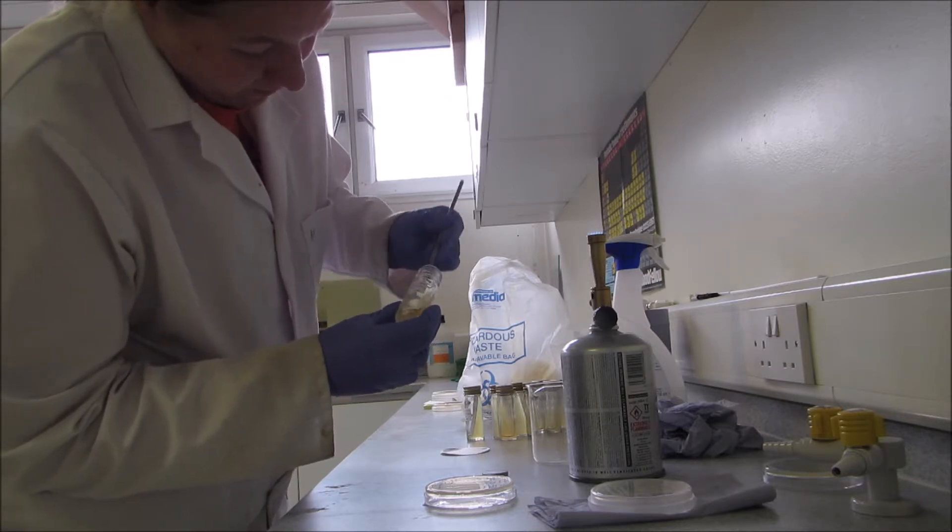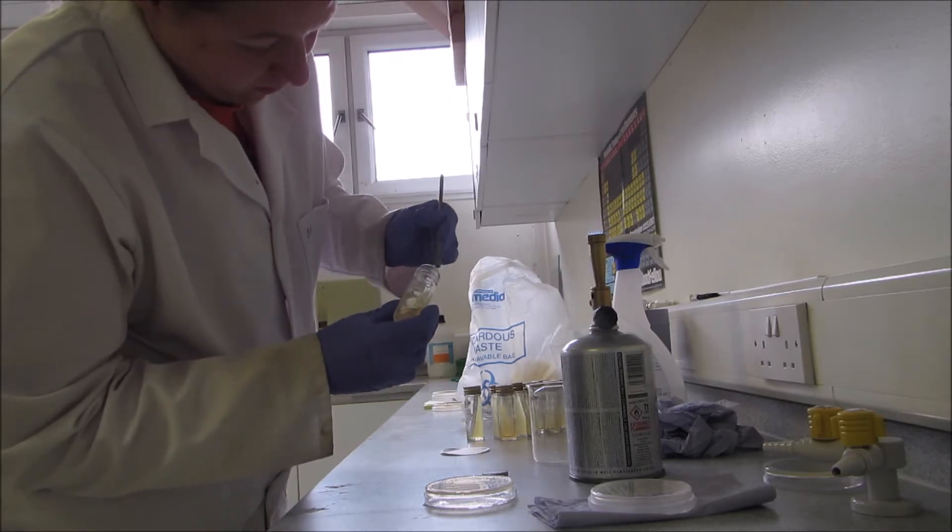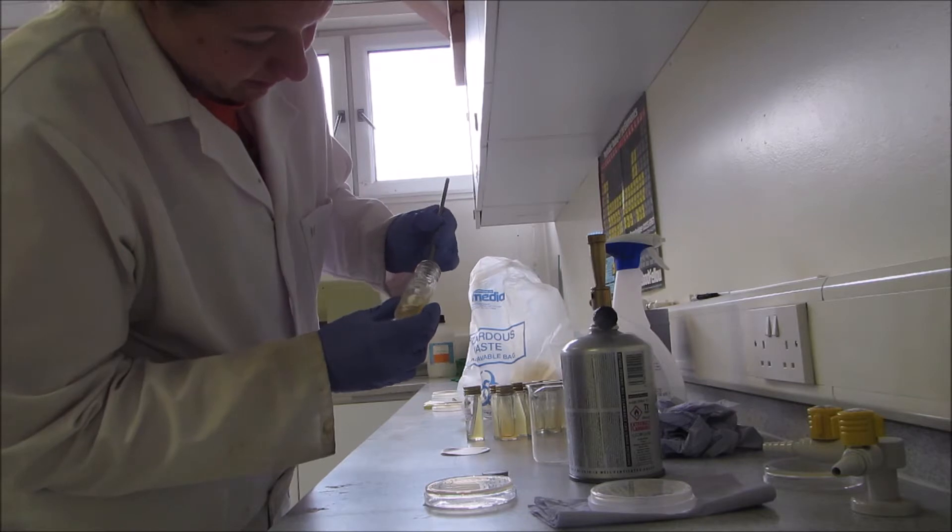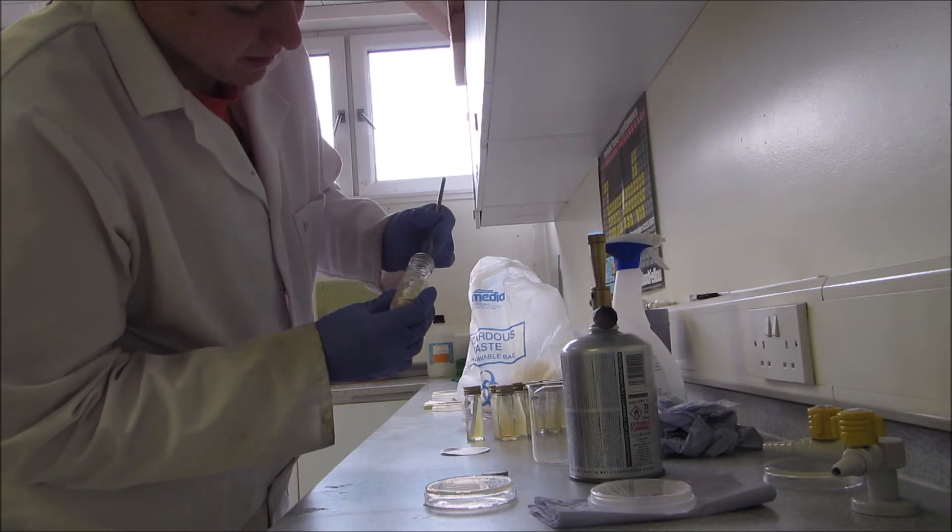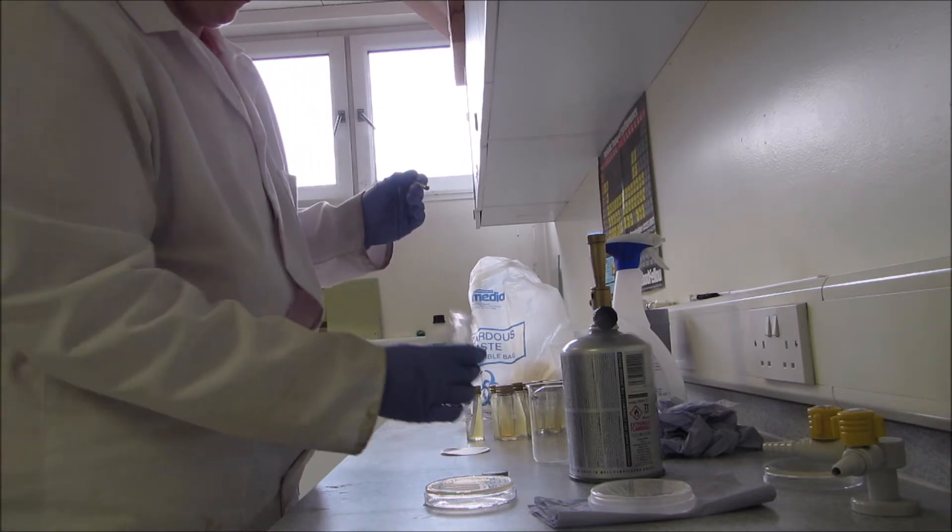And you can also do a few more. The aim is to get it so the whole plate is covered like a lawn, so that you can't pick out single colonies. And then this can be used as a stock bacteria to produce single colonies again.